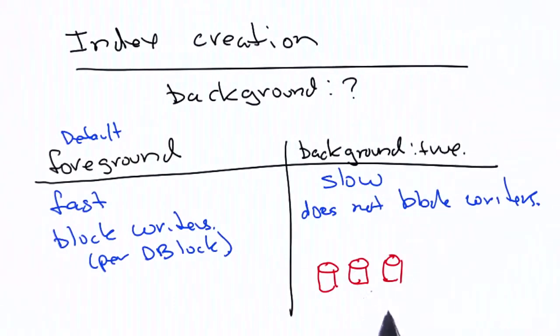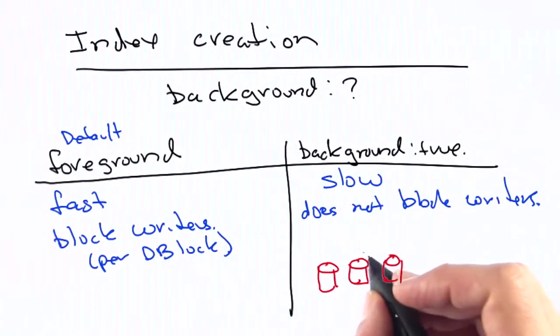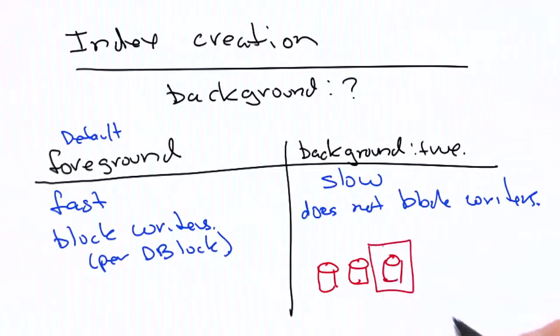then it's possible, if you want to get fast index creation, that you can pull one of your servers out of the replica set, and then the requests will only go to these two servers, and while that's happening, you can build the index here in the foreground, where it's fast, and you can bring this instance back into the replica set, and it'll get updated.